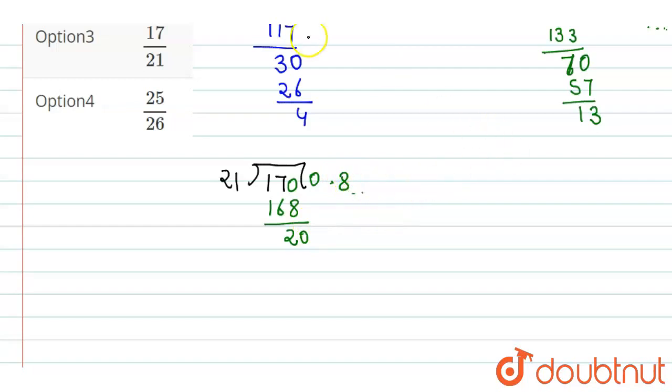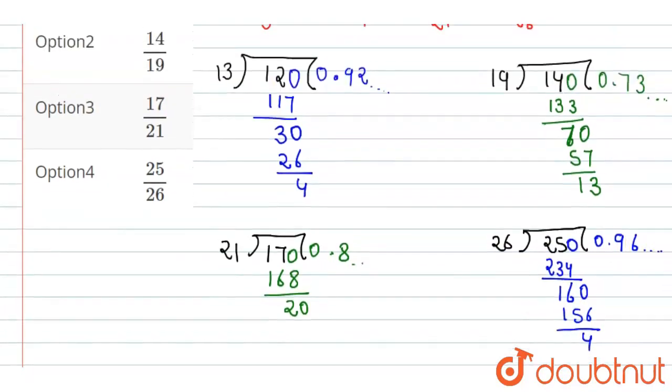Next, our number given is 25 upon 26. Now here we can see 25 is smaller than 26, so 0 point. The remainder is 4, so we get 0.96 and something.